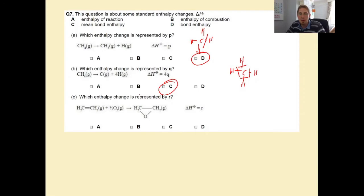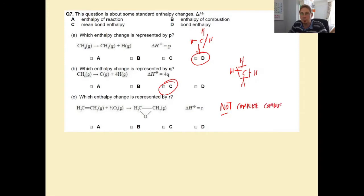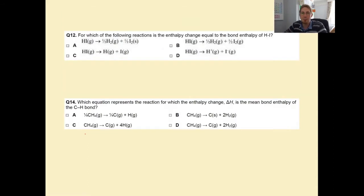Which enthalpy change is represented by R? This is ethene and half an oxygen molecule forming a species. Lots of people - about a quarter of you - went for this being an enthalpy of combustion, but it's not complete combustion. The enthalpy of combustion requires completely reacting with oxygen to form carbon dioxide and water, so it is clearly just an enthalpy of reaction. Only three quarters of you got that right.